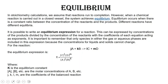Equilibrium is achieved when there is a constant ratio between the concentration of the products to the reactants. So the concentration of the products becomes constant and the concentration of the reactants becomes constant. Also, it is when the rate of the forward reaction is equal to the rate of the reverse reaction, meaning that the rate of forming product is the same rate at which reactant is formed.